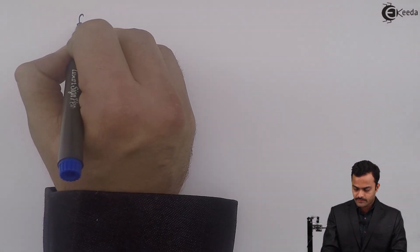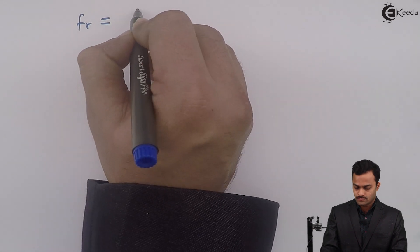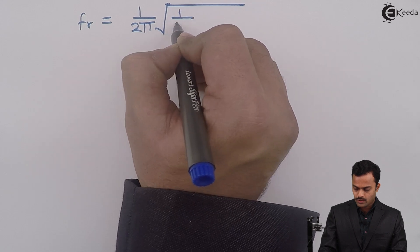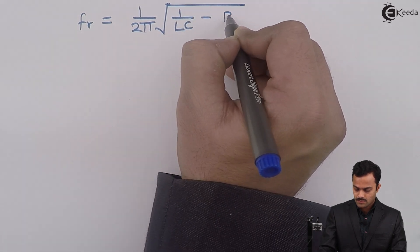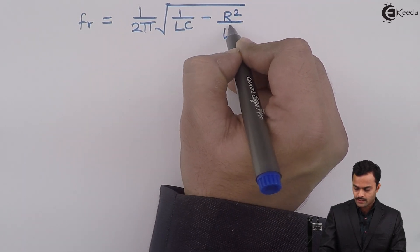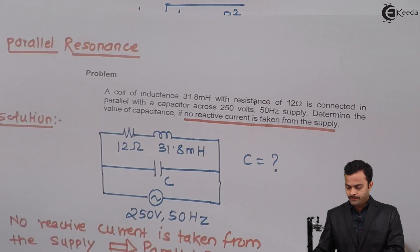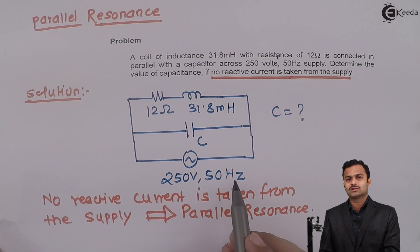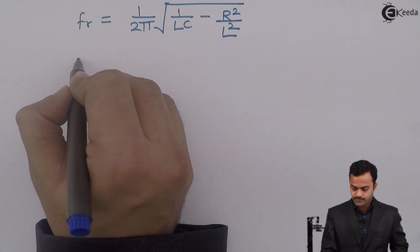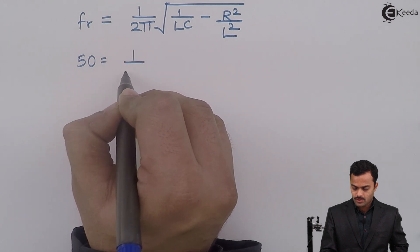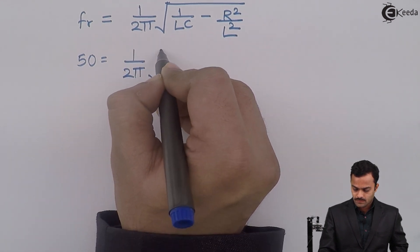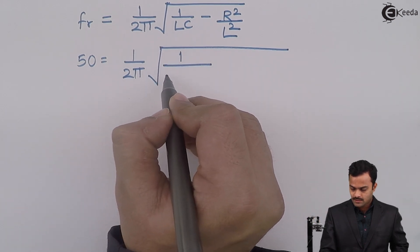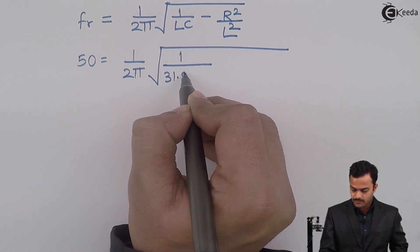Resonating frequency FR equal to 1 upon 2π root of 1 upon LC minus R square divided by L square. If you adjust the value of capacitor such a way that this will become resonating frequency. So 50 hertz equal to 1 upon 2π root of 1 upon what is the value of L? It's 31.8 mH.